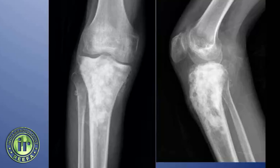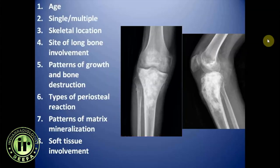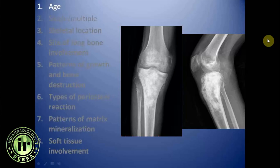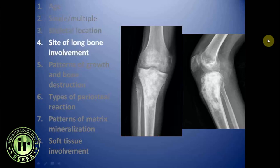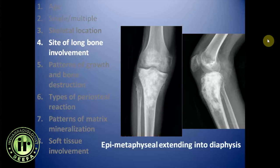We will evaluate this bone tumor on the basis of the following points. First, age of the patient is 22 years. Second, the lesion is single, involving the proximal tibia. The skeletal location is the appendicular skeleton involving long bones. The site of long bone involvement is the epiphyseal and metaphyseal region of the tibia, extending into the diaphysis, involving the medullary cavity, and it is predominantly central in location.